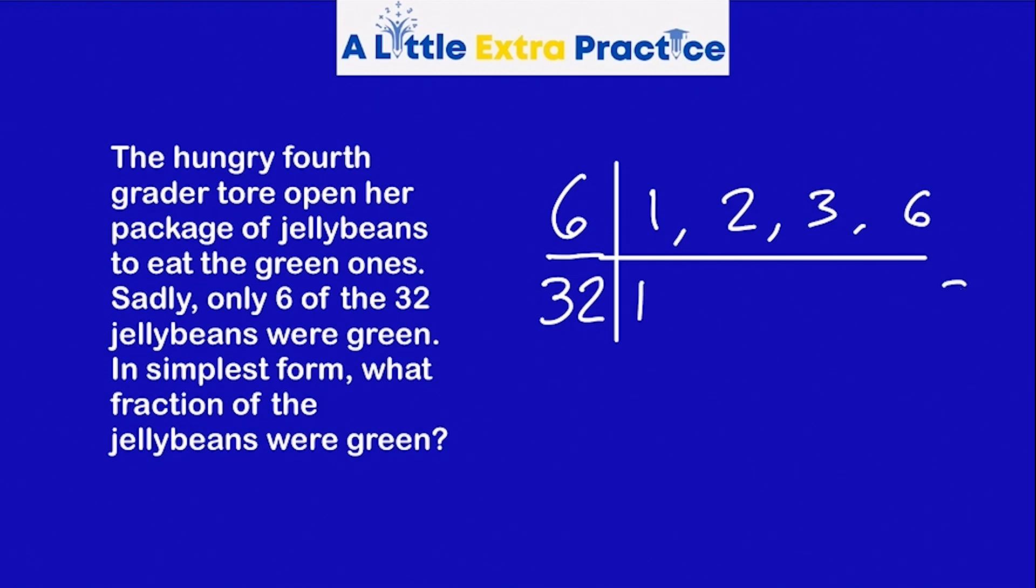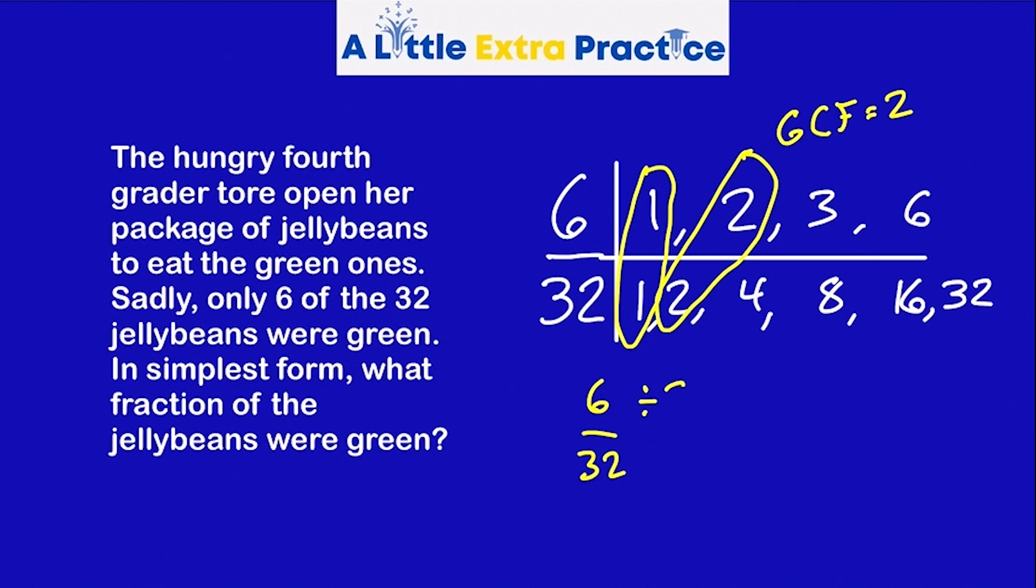Five no, six no, seven no, and then we're to eight. So what do they share? Common factors include a one, a two. Looks like two is a GCF. Six divided by two is three. So we have three out of 16. So three out of every 16 jelly beans were green.